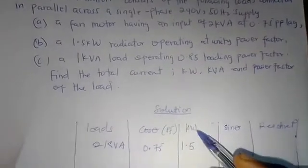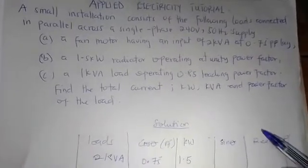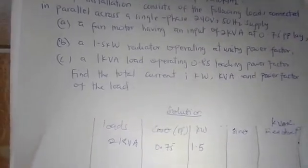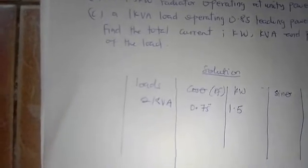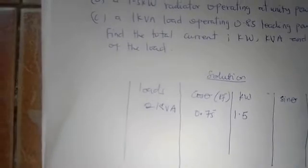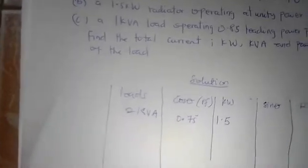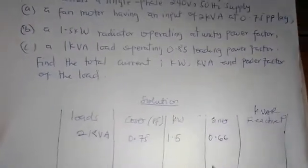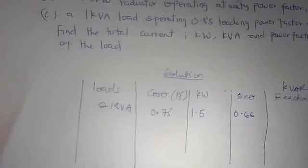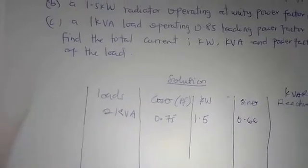Now for the reactive part of Load 1: we find cos⁻¹(0.75) = 41.4°, then sin(41.4°) = 0.66. Multiplying 0.66 × 2 KVA gives us 1.32 KVAR. Since the power factor is lagging, this reactive value is positive: 1.32 KVAR. We are done with Load 1.